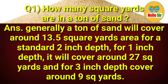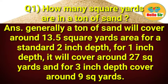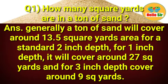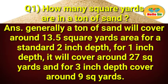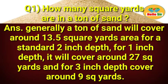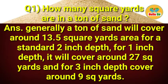So, how many square yards are in a ton of sand? Generally, a ton of sand will cover around 13.5 square yards for a standard 2-inch depth. For a 1-inch depth it will cover around 27 square yards, and for a 3-inch depth it will cover around 9 square yards.